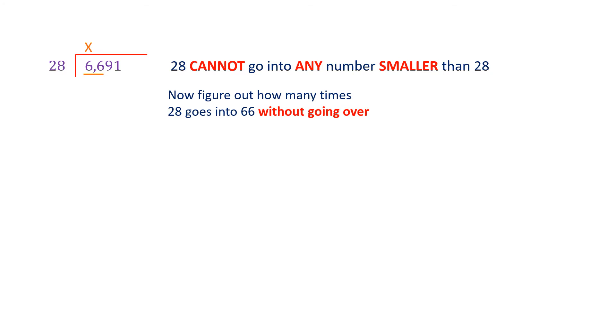So now we have to figure out how many times 28 goes into 66 without going over. That's way easier than figuring out how many times it goes into 6,691. So let's just do some multiplication. 28 times 2 is 56. Well, that's not 66. Let's try 3. 28 times 3 is 84. 84 has gone too far. It is over 66. 84 is too big. Therefore, I'm going to say 56 is the number I want, but I want 2 because 28 times 2 is 56. So 56 is as close as I'm getting to 66 without going over. So where does that 2 go? Well, let's bring the problem down. That 2 goes over the 66. It goes over that second 6. This is saying 28 goes into 66 two times without going over.